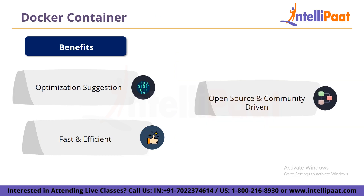The third feature is best practices and optimization suggestions — Copilot not only generates code suggestions but also provides suggestions for best practices and optimizations, which can improve code quality and reduce the likelihood of errors and bugs. It is also fast and efficient, generating code suggestions quickly and accurately, allowing developers to write code faster with greater accuracy. Additionally, Copilot is open source and community driven, built on top of OpenAI's GPT language model, allowing for ongoing improvements and updates based on feedback from the developer community.